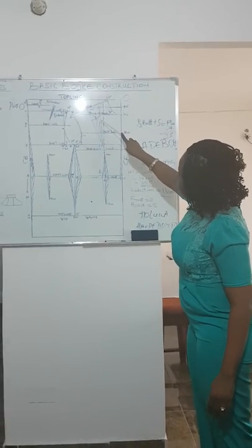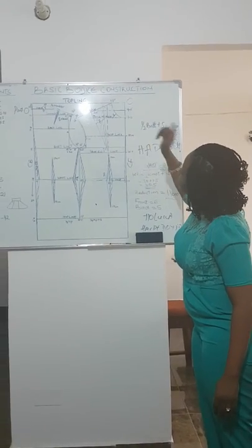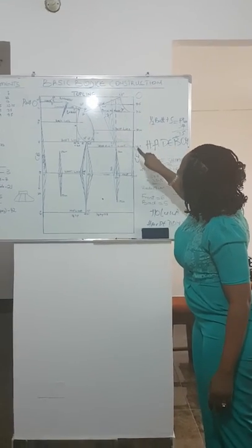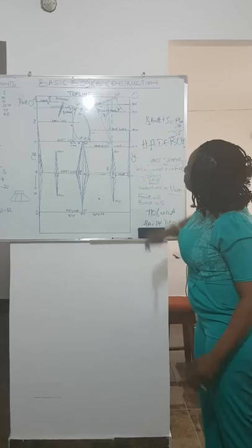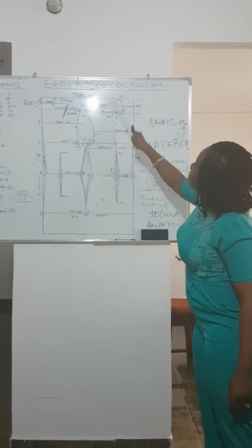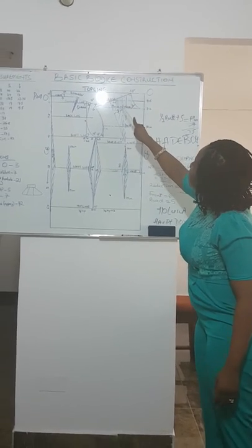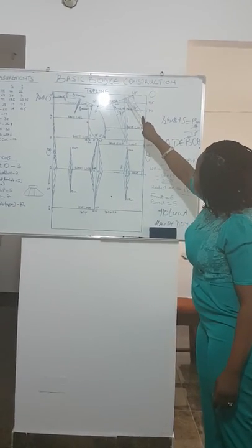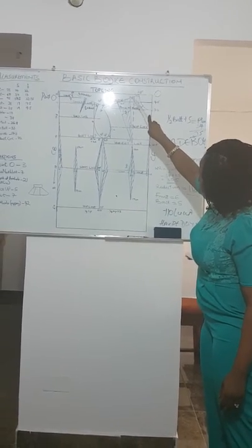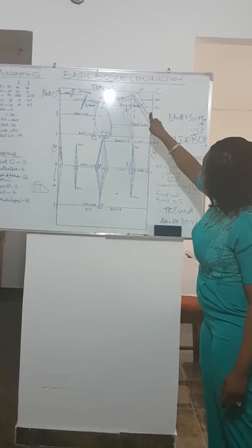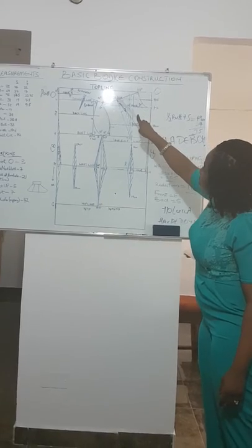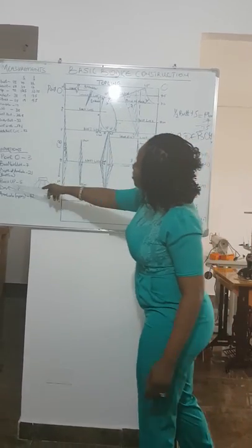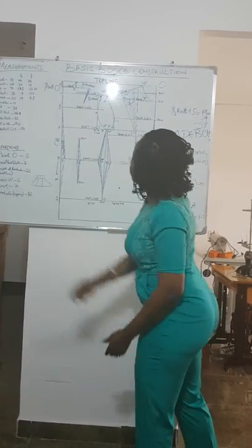This is called the inner dart leg. Then you rule it to two centimetres below. Measure the size of your dart. From these two centimetres on the shoulders, the size of your dart. The size of our dart is seven.